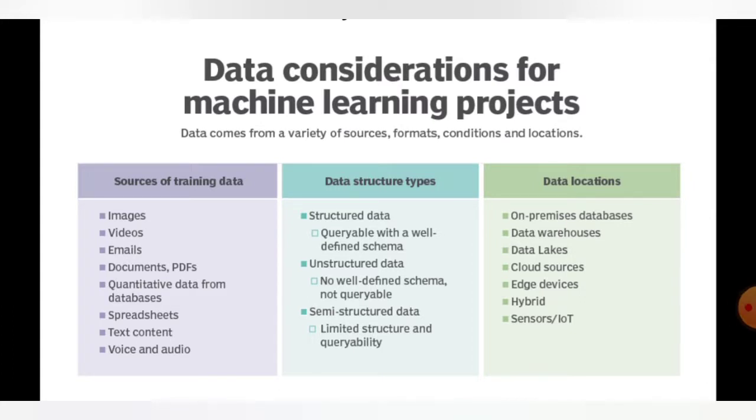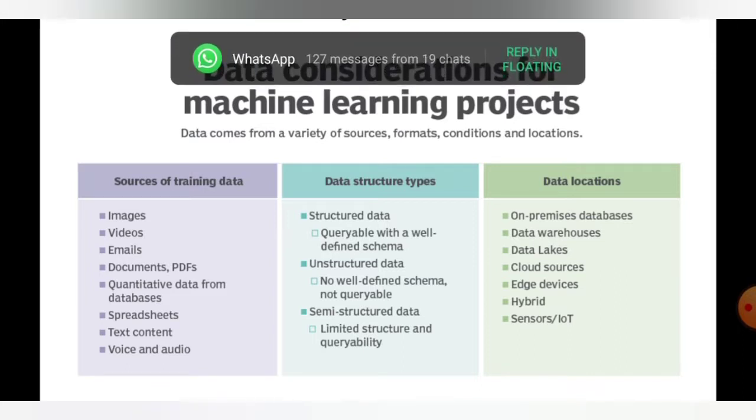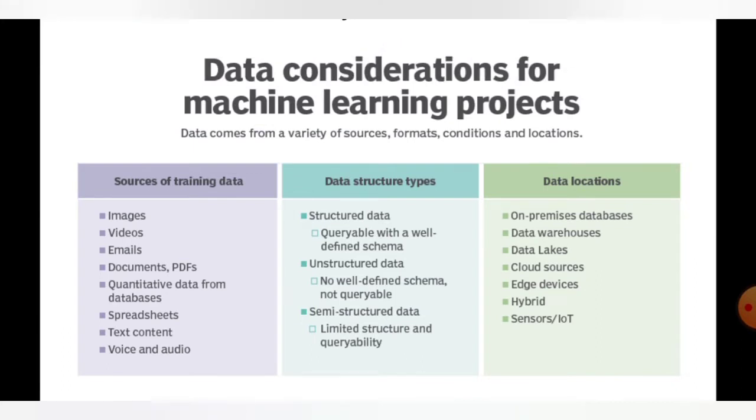Data location identifies which data stores and addresses we need. Data location plays a much more important role. The first one is data location: on-premises databases, data warehouses, data lakes, cloud sources, edge devices, hybrid sensors, or IoT. These are the data locations.